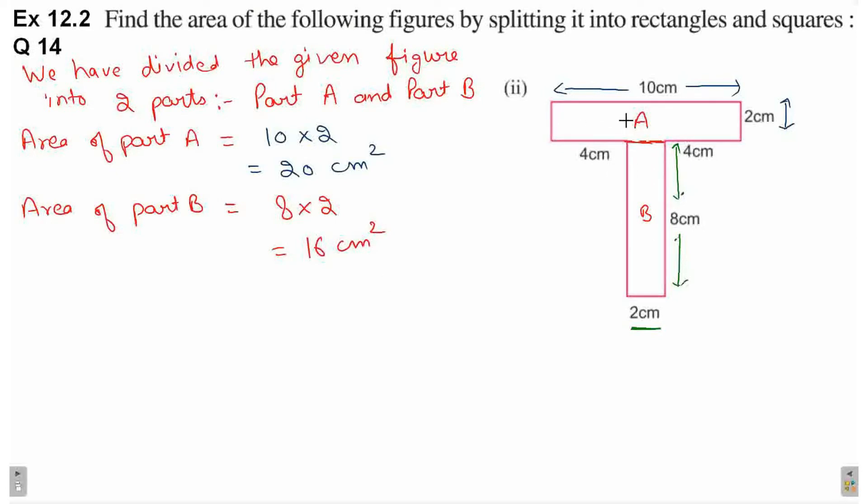In the case of rectangles, you know that opposite sides have equal length. So if this side is 10 cm, the opposite side also has a total length of 10 cm. Similarly, if the shorter side is 2 cm, its opposite side is also 2 cm. The same applies to part B. We have calculated the areas of part A and part B.